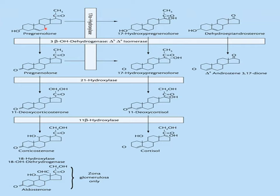Other highlighted enzymes oriented in the vertical manner are necessary for the synthesis of glucocorticoids and mineralocorticoids, such as 3-beta-hydroxysteroid dehydrogenase, 21-hydroxylase, and 11-beta-hydroxylase. These three are especially important when discussing adrenogenital syndrome or adrenocortical hyperplasia.